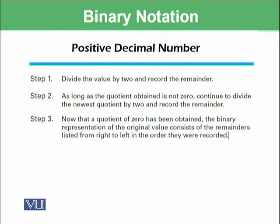And how to convert a decimal number into binary notation? These are simple three steps. One is divide the value by 2 and record the remainder. As long as the quotient obtained is not 0, continue to divide the newest quotient by 2 and record the remainder. Now that the quotient of 0 has been obtained, the binary representation of the original value consists of remainders listed from right to left in the order they were recorded.